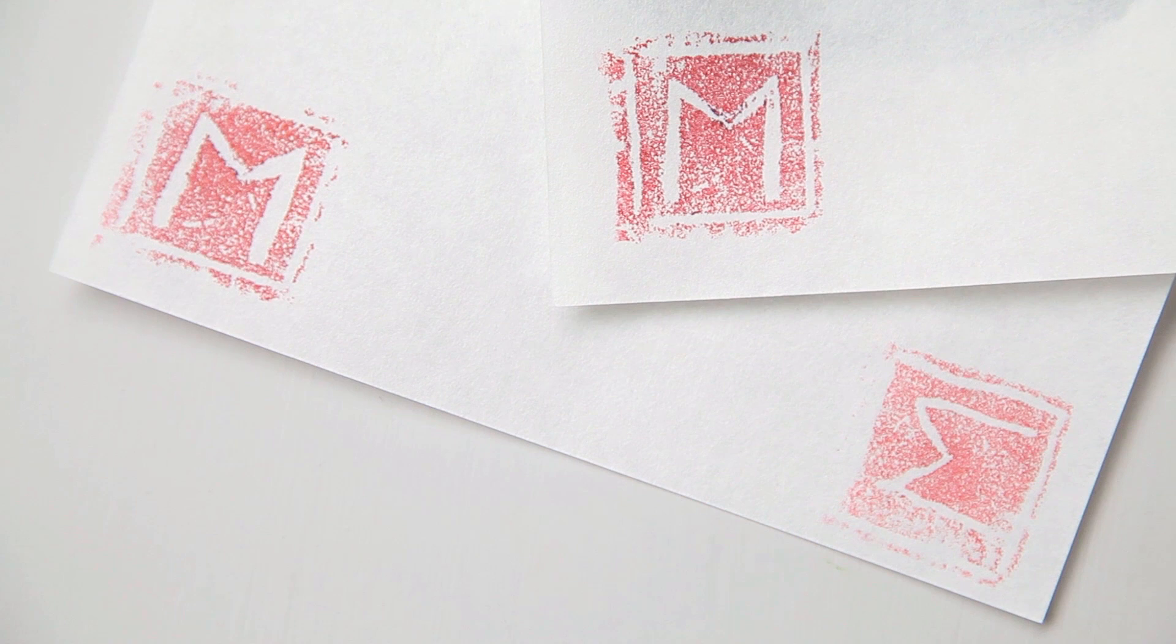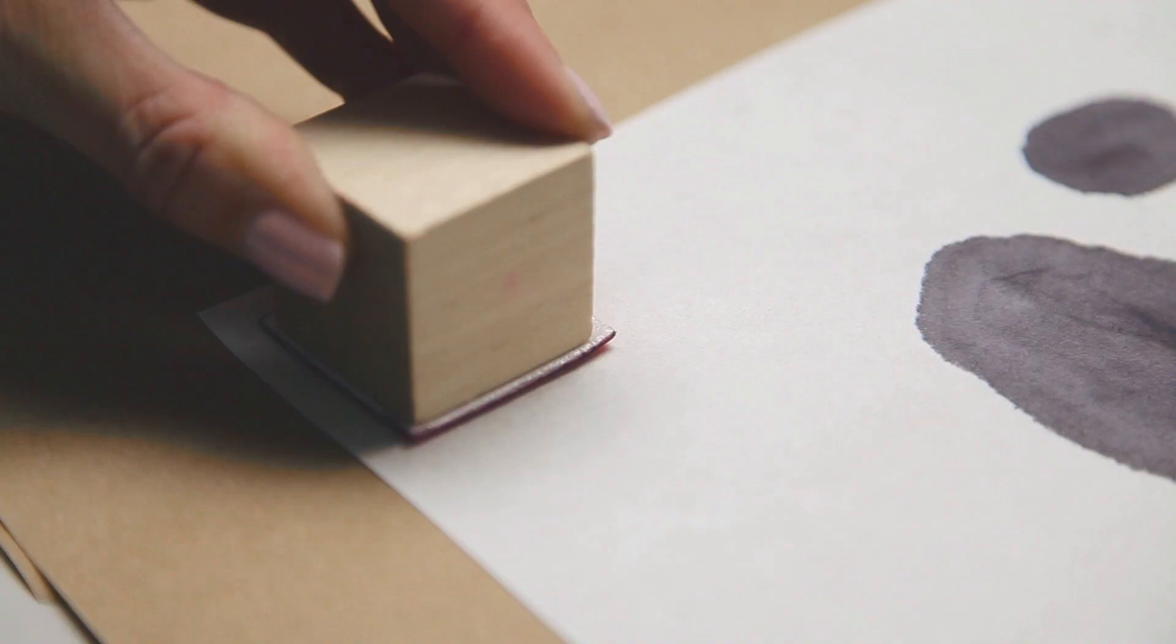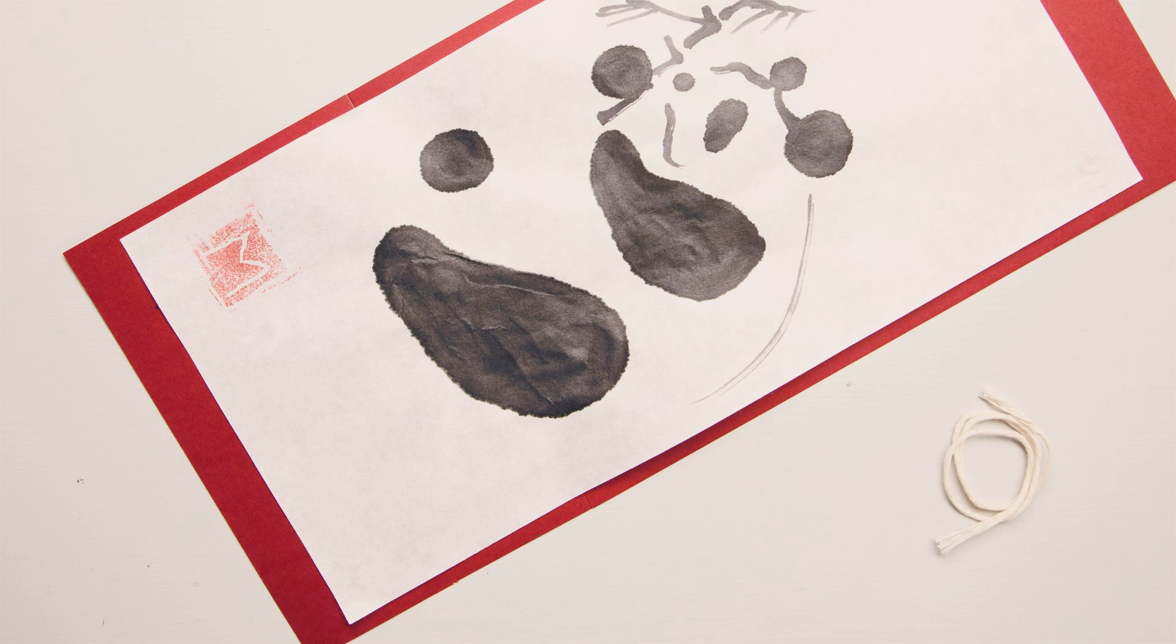Press your chop firmly and evenly into the red stamp pad, and test your stamp on a piece of scrap paper. If it looks good, repeat this process onto your final painting.